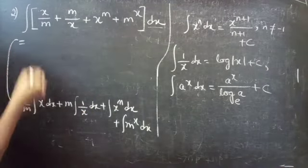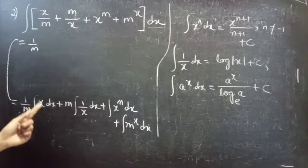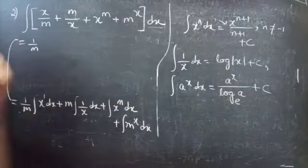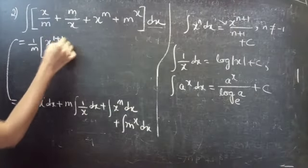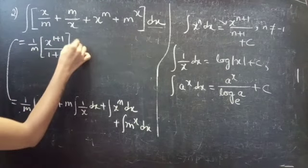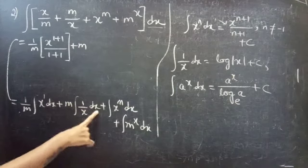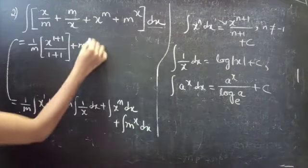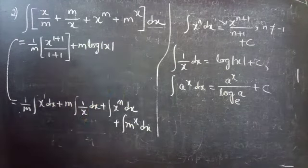Applying the formula: (1/m) times integral x dx — since x equals x^1, for n equals 1 you get x^(1+1) divided by (1+1), which is x^2 divided by 2. Plus m times integral (1/x) dx, using the formula integral (1/x) dx equals log|x|.